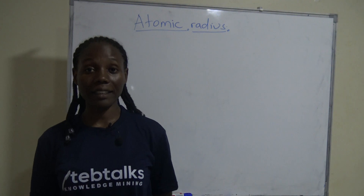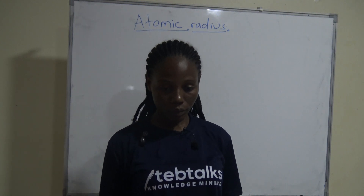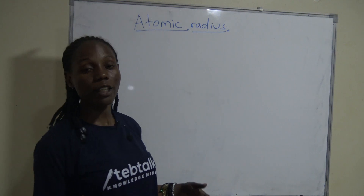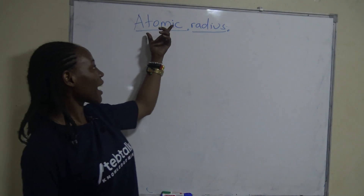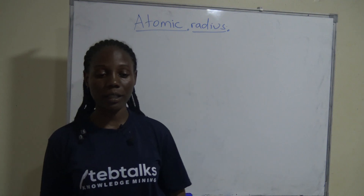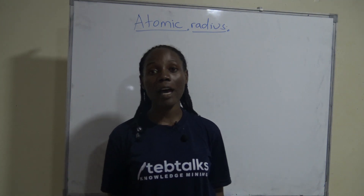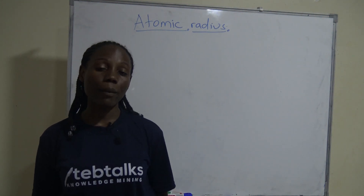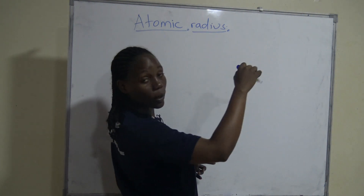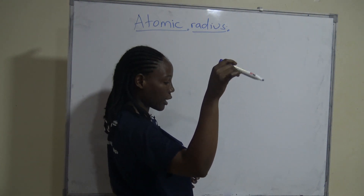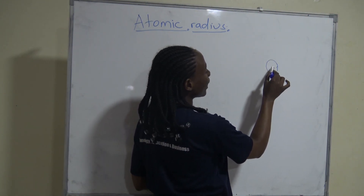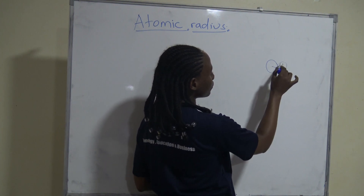We ended looking at atomic radius. Breaking down the words: 'atomic' comes from atom, and an atom is the simplest form of an element. 'Radius' is half the diameter. So when we say atomic radius, remember when we draw the illustration of the energy levels in an atom — this is one atom — we are talking about its radius.